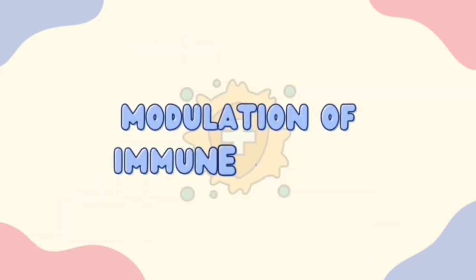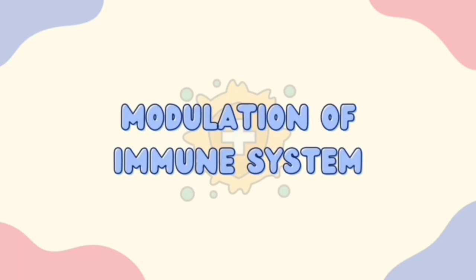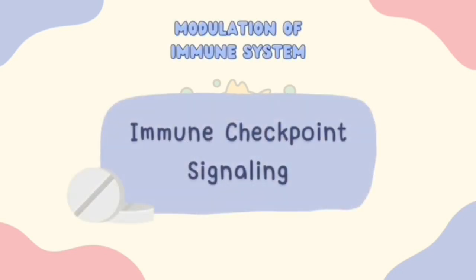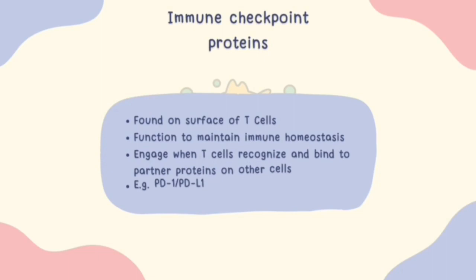Moving on, modulation of the immune system has also been targeted to inhibit different cancers. Studies have shown evidence that promoting immune cell activities can have profound effects on specific cancers. Immune checkpoint signaling focuses on immune checkpoint inhibitor therapy, which is one of the approaches used to treat cancer by modulating a patient's own immune system. Immune checkpoint proteins are inhibitory receptors that restrain T-cell functions in order to maintain immune homeostasis, and they are expressed on the surface of immune-related lymphocytes.